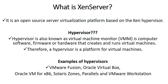We do have examples of hypervisors: VMware Fusion, VirtualBox, KVM for x86, Solaris Zones, Parallels, and VMware Workstation. These are examples of hypervisors. As we said, a hypervisor could be a computer software, a firmware, or hardware, and there are two types of hypervisors.